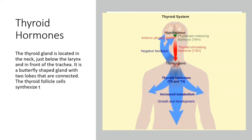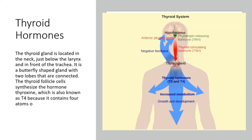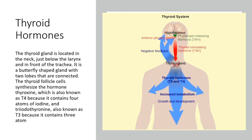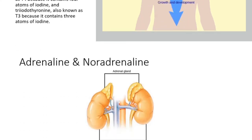The thyroid follicle cells synthesize the hormone thyroxine, also known as T4, because it contains four atoms of iodine, and triiodothyronine, also known as T3, because it contains three atoms of iodine.